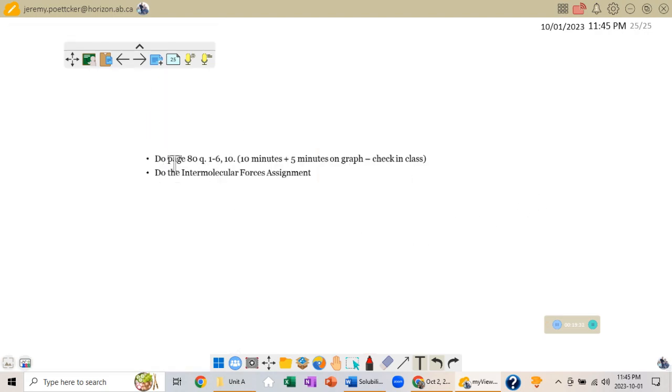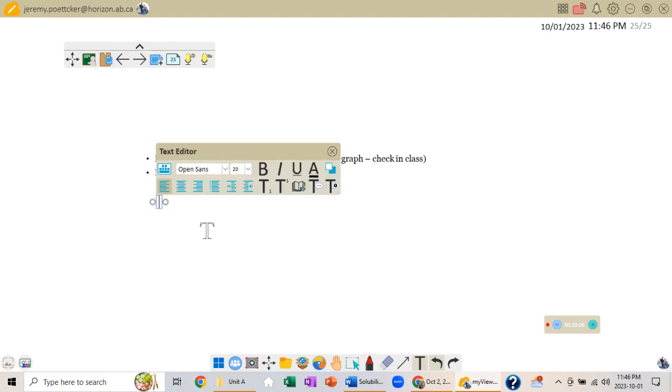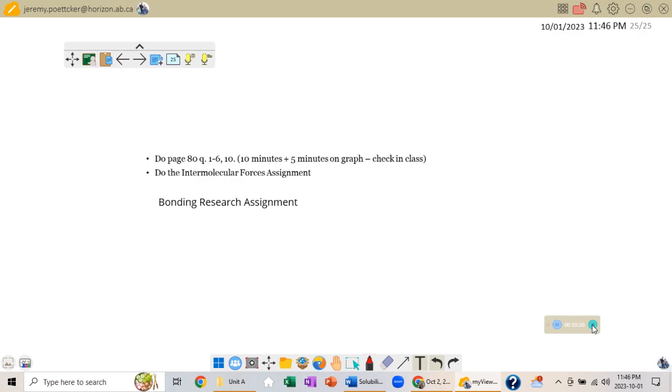So your first job: page 80, questions 1 to 6 and 10. With question 10, you are welcome to do that graph by hand, but I would recommend that you did that in Google Sheets. If you're having trouble figuring that out, you could Google how to do it, or when I'm back I can help you. Get the data in there. And then in your workbook, you have an intermolecular forces assignment that needs to be done. If for some reason you finish that all, which I don't know, you might, you also have a bonding research assignment that we can hand out to you. Other than that, have a great day. We'll see you when I get back.